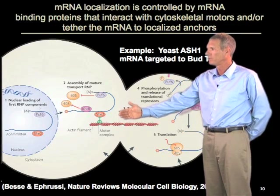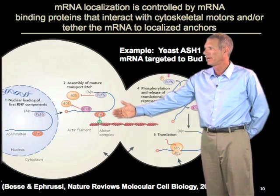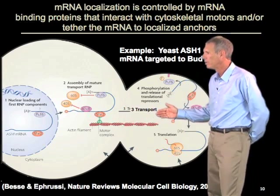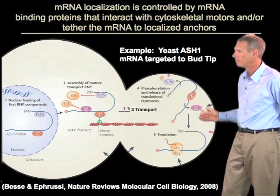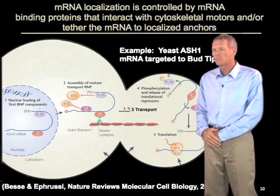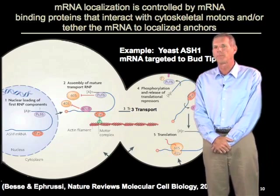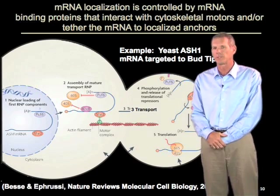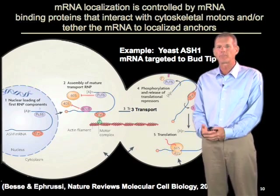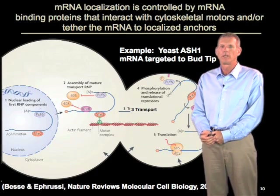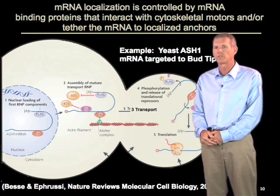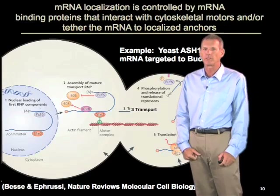For example, in this particular RNA, the C2 RNA binds to the message and then interacts with a motor complex, which moves along actin filaments so that it reaches the bud tip. This is a general principle: RNA-binding proteins bind to localized RNAs and target them to specific regions — in many cases by interacting with cytoskeletal motors, but in some cases by interacting with anchors localized to certain parts of the cell to tether the RNA to that vicinity.